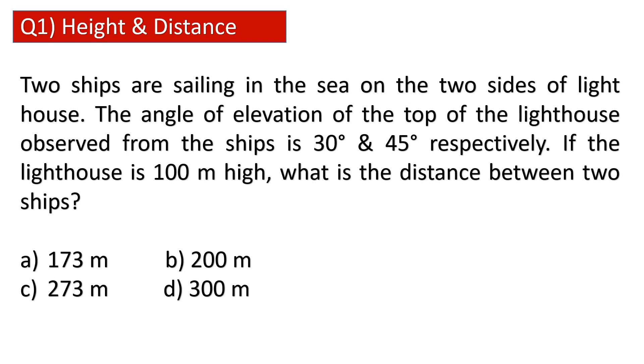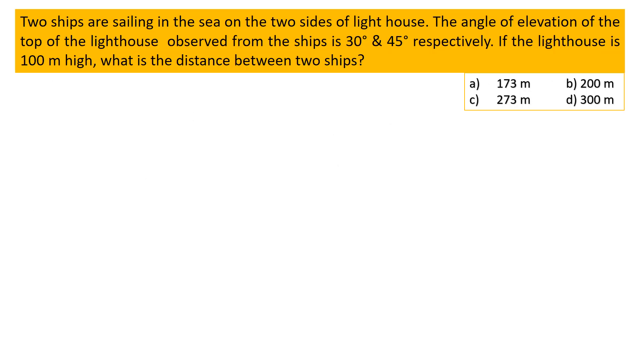Let's see how to calculate it. First understand the problem. Suppose here is a lighthouse, and here is ship A and here is ship B. The problem says that the angle observed from ship A to top of the lighthouse is 30°.